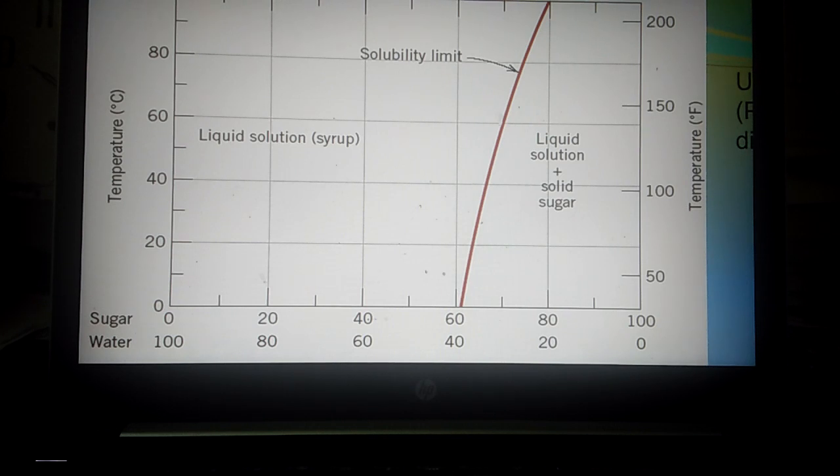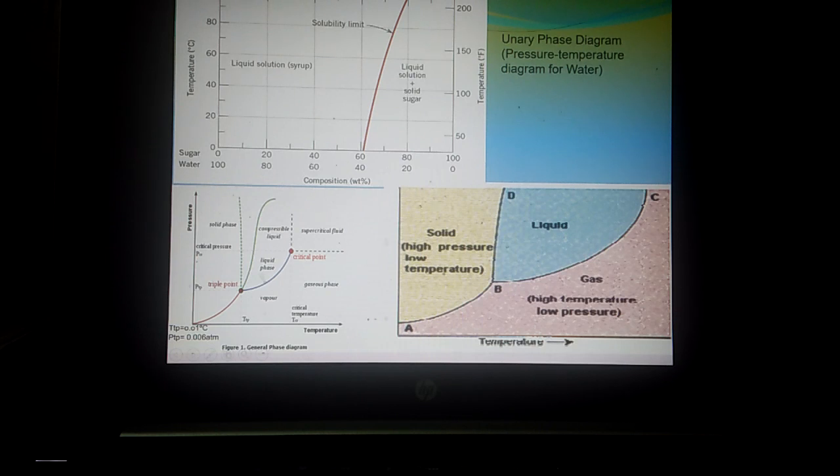This red line is the solubility limit. But if we increase the temperature, you can still add more sugar. It means the solubility limit also increases with the increase in temperature. So this is the solubility limit with the example of sugar in water.